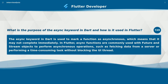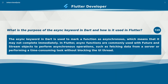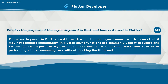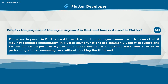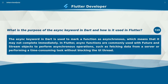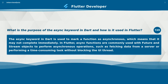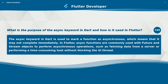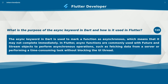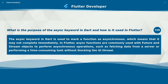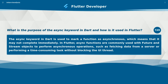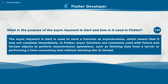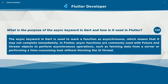What is the purpose of the async keyword in Dart and how is it used in Flutter? The async keyword in Dart is used to mark a function as asynchronous, which means that it may not complete immediately. In Flutter, async functions are commonly used with future and stream objects to perform asynchronous operations, such as fetching data from a server or performing a time-consuming task without blocking the UI thread.